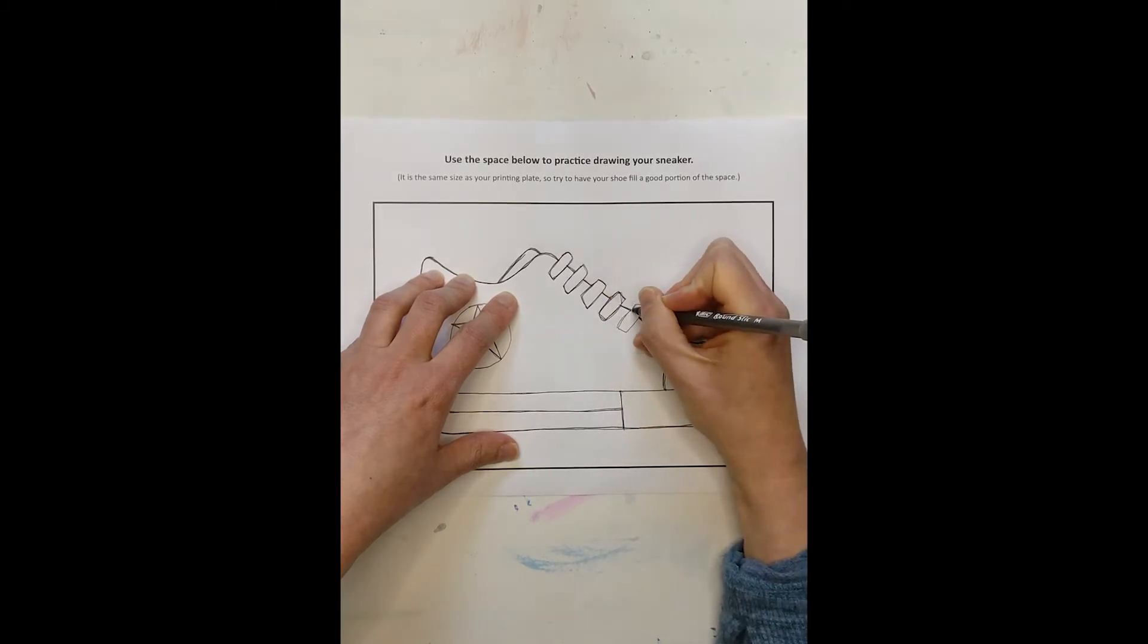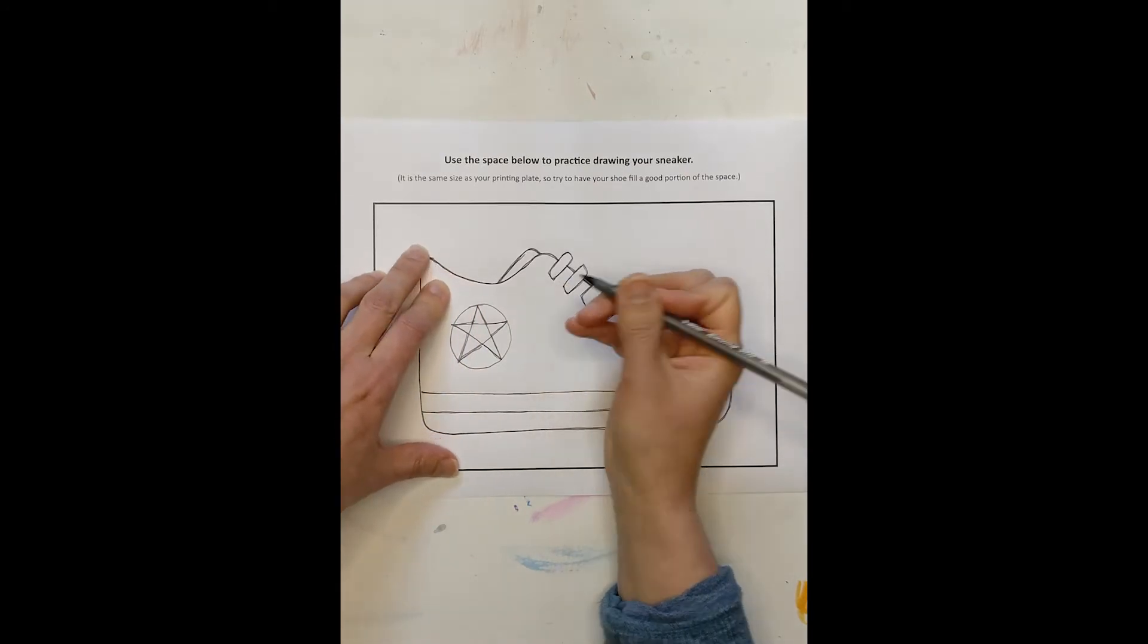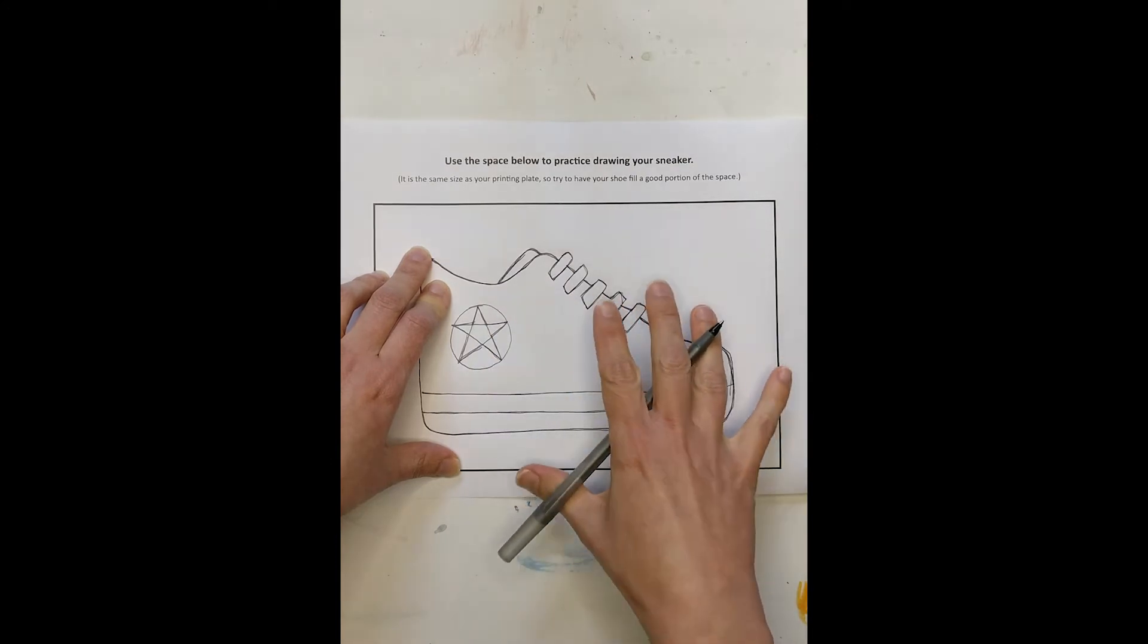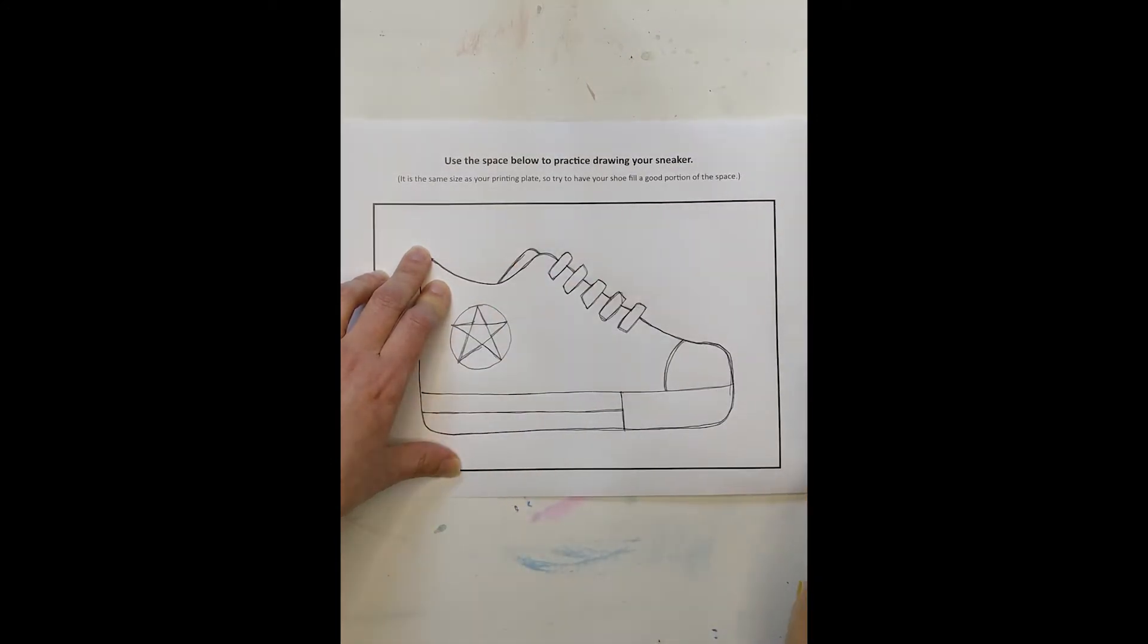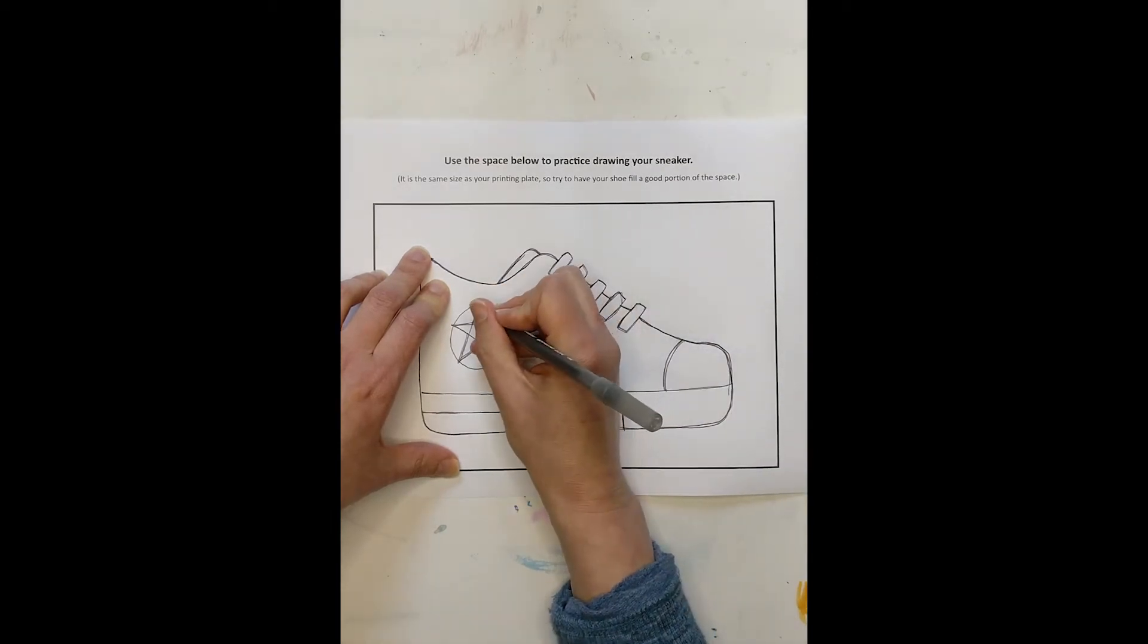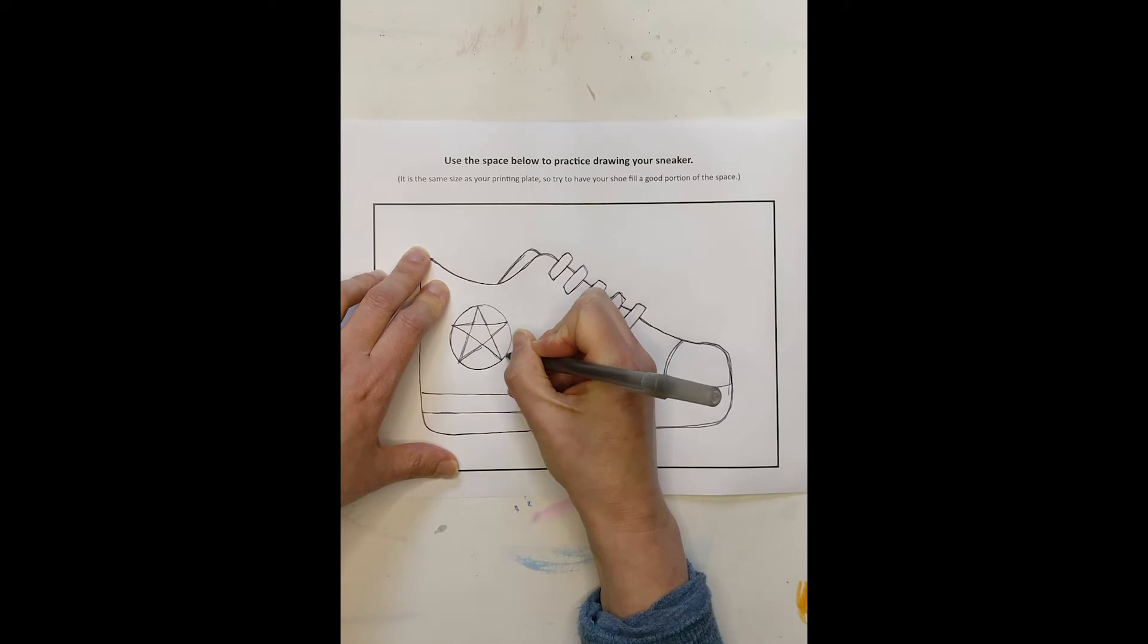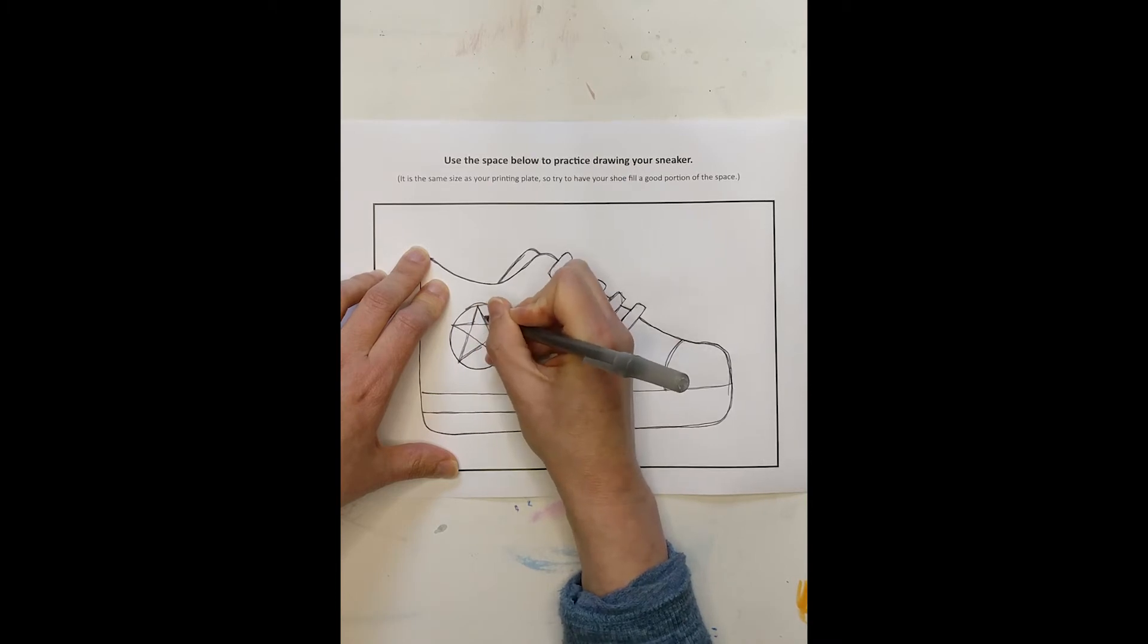This also gives me, of course, a chance to correct anything if I didn't feel like the line I did the first time when I was just practicing was right. And of course, if you practice drawing a certain shoe and then you decide to do something completely different and just draw directly on your plate, that is fine, too. You have that option. This I just found to be an easy way for me to transfer the image. So I thought it might work for all of you.